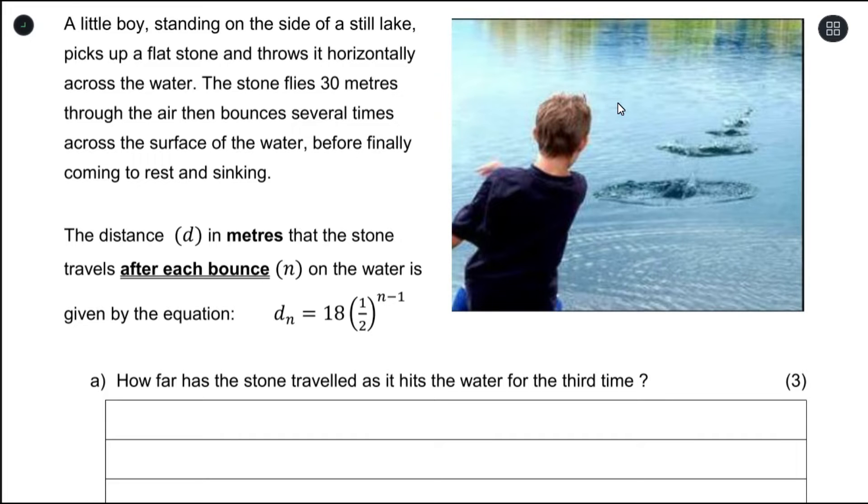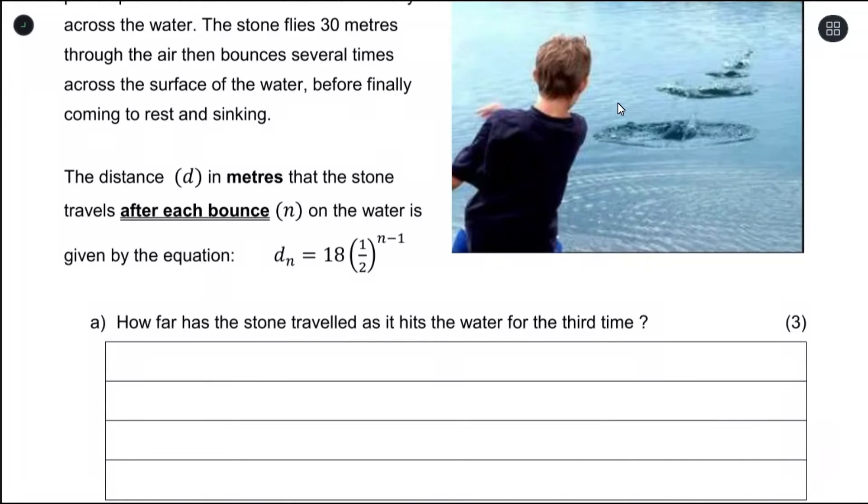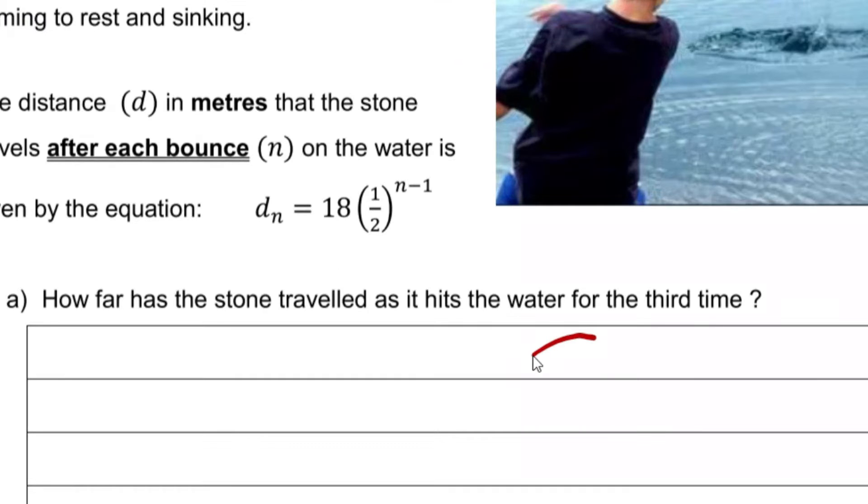Now the first question asks how far has the stone traveled as it hits the water for the third time. So if we draw something to show this, we could say that this person threw a stone and it hits the water after 30 meters. We need to find out how far this stone will travel after it hits one, two, then three.